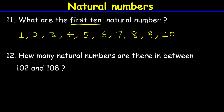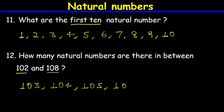Question number twelve: how many natural numbers are there between 102 and 108? The natural numbers between 102 and 108 are 103, 104, 105, 106, and 107. Therefore there are 5 natural numbers between 102 and 108.